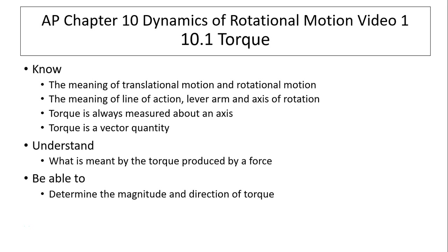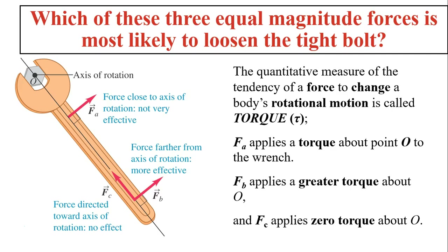The objectives are: know the meaning of translational motion and rotational motion; know the meaning of line of action, lever arm, and axis of rotation; know that torque is always measured about an axis; know torque is a vector quantity; understand what is meant by the torque produced by a force; and be able to determine the magnitude and direction of a torque.